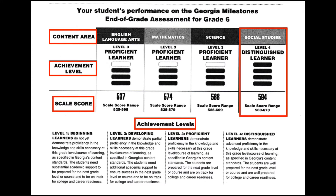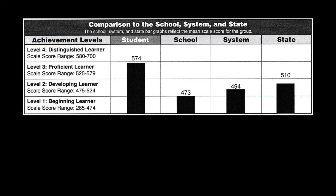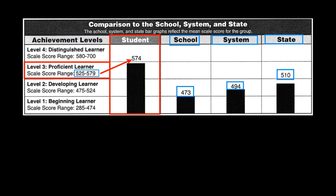The child also receives a comparison based on how they performed relative to the school, the system, and the state. This particular student scored at Level 3, a proficient learner. This child is compared to the school, where the average student scored 473; the school district, where the average student scored 494; and the state, where the average student scored 510.